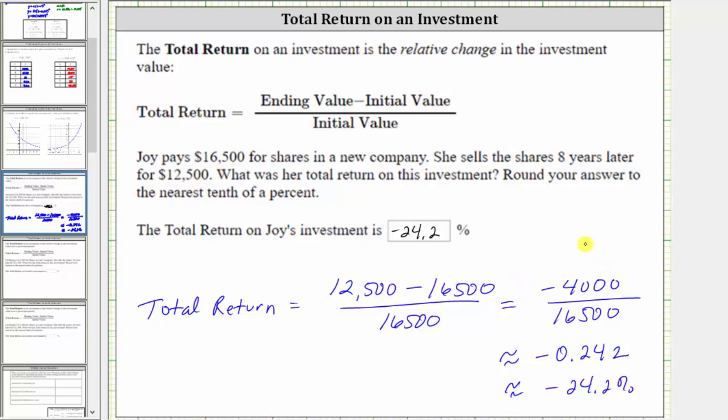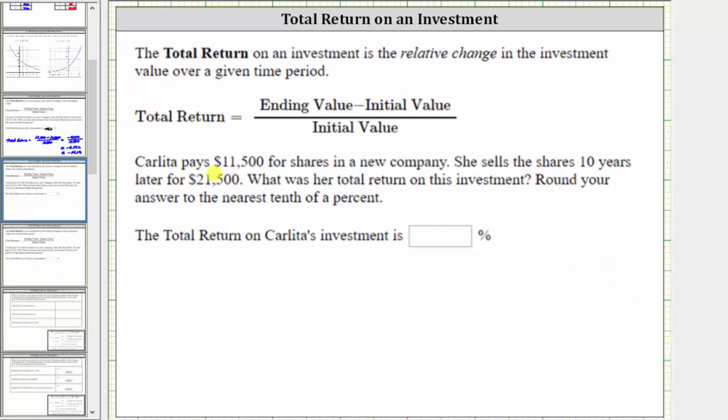Let's take a look at a second example. Carlita pays $11,500 for shares in a new company. She sells her shares 10 years later for $21,500. What was her total return on this investment?